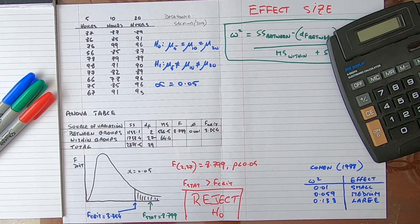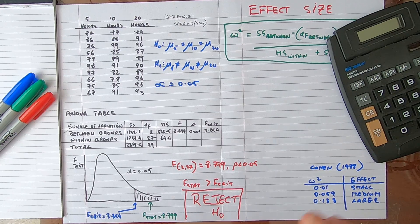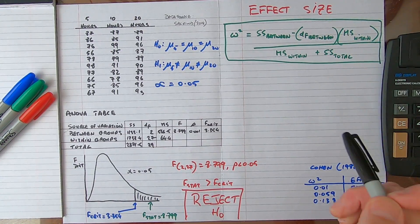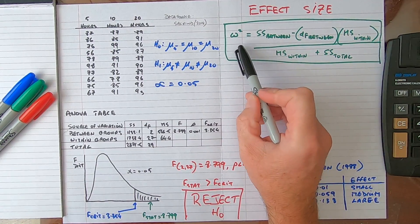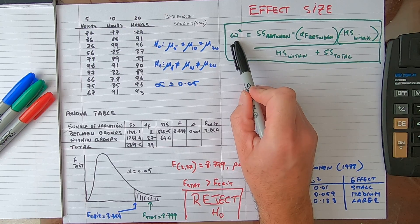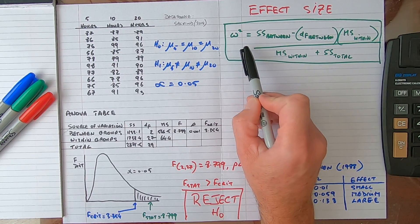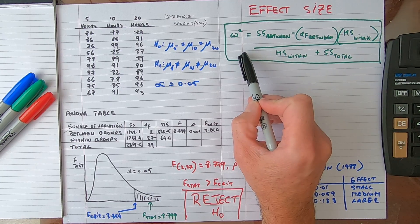That's where effect size comes in. Our effect size for ANOVA is known as omega squared, and so this is the omega symbol here, it's like an upside down w, a Greek letter.